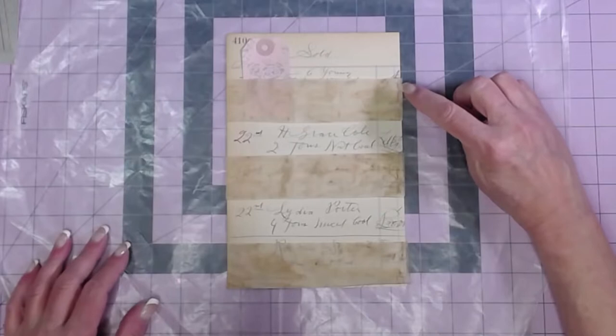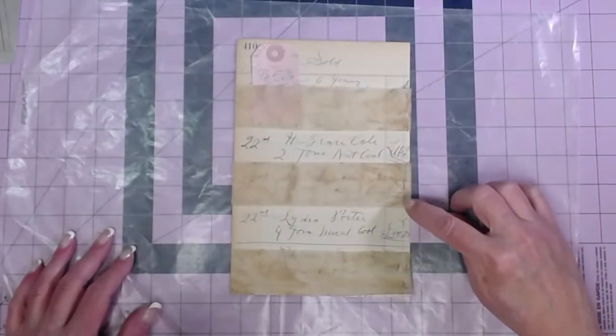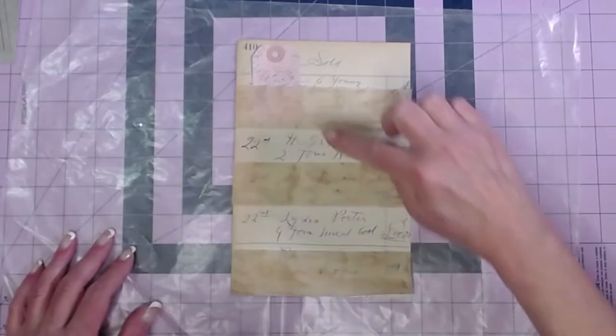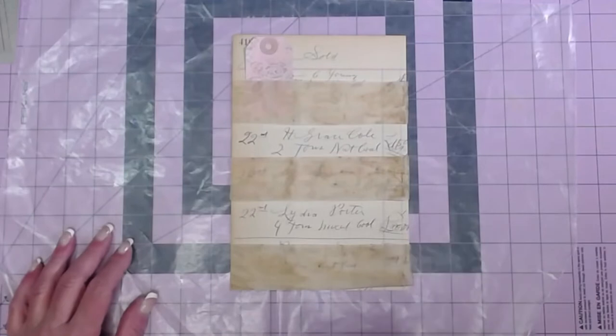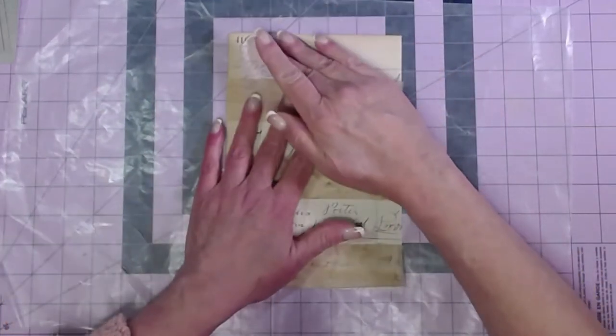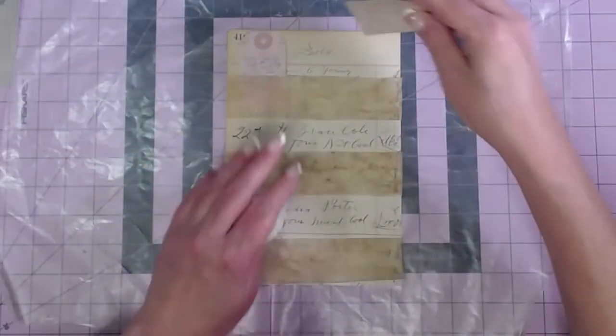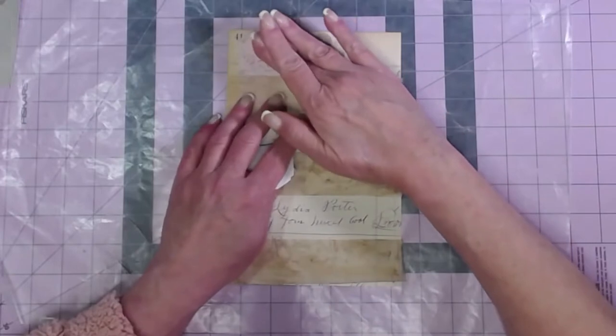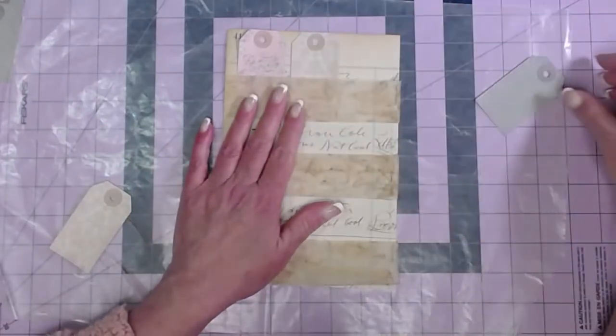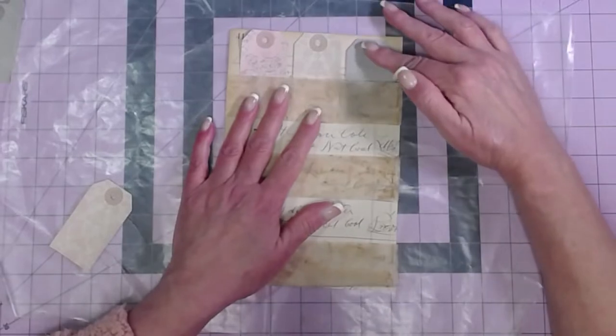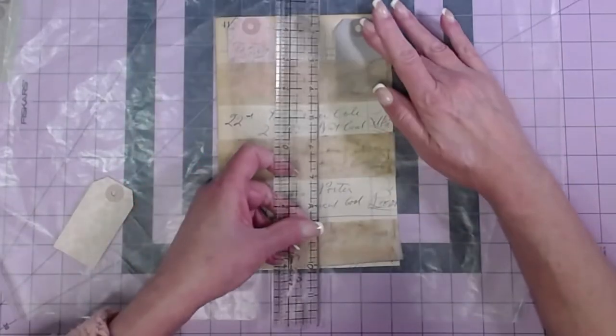I will sew down this side, sew across, sew up that side. Sew down here, sew across, sew up there. Same thing down here. And then I will just sew a line of stitches here and a line of stitches there to make my pockets. I will take my ruler.